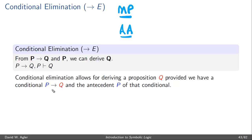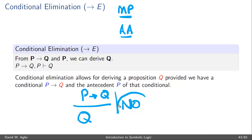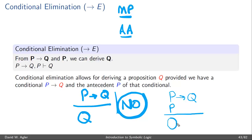It's important to note what conditional elimination does not say. It does not say that if we have a conditional if P then Q, we can derive Q straight away — this is not what's being asserted. It's saying that you need two expressions to derive the consequent of the conditional. You need the conditional if P then Q, and you need the antecedent on its own line. You'll notice how these two formulas must match, and if they match, then you can reason to the formula to the right of the arrow.